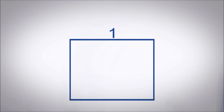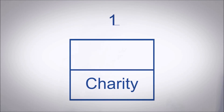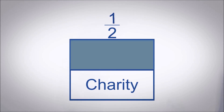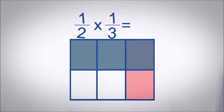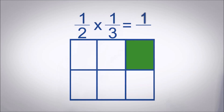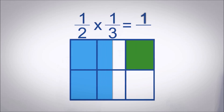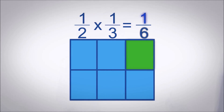When we need to multiply two fractions, this is our reaction: multiply the numerators, then multiply the denominators.